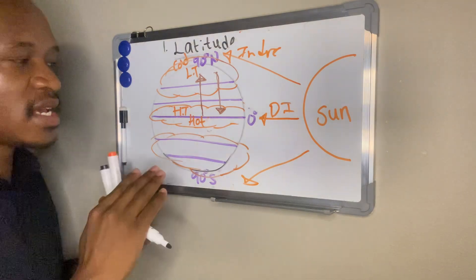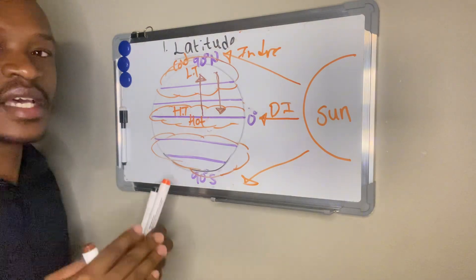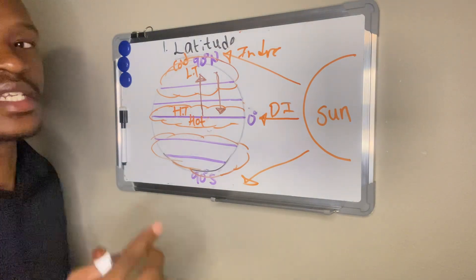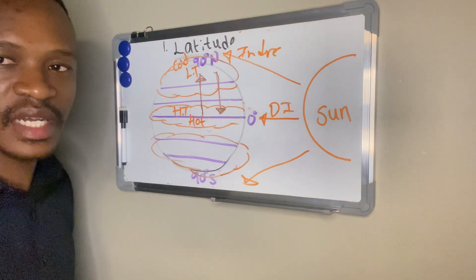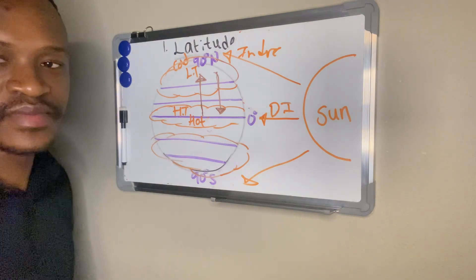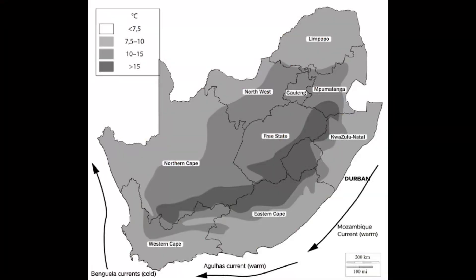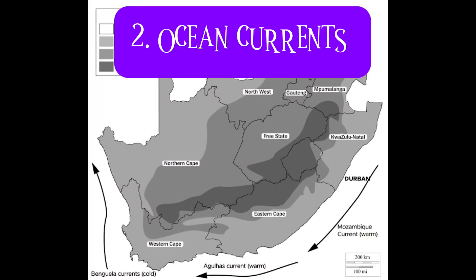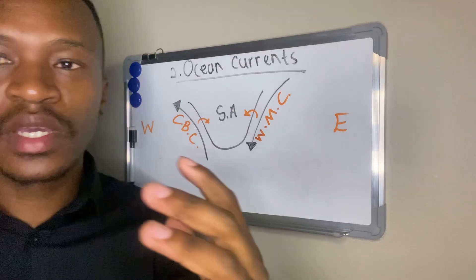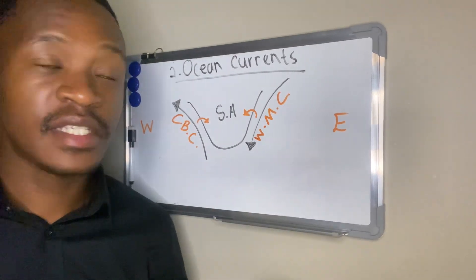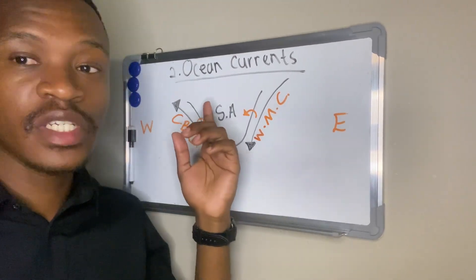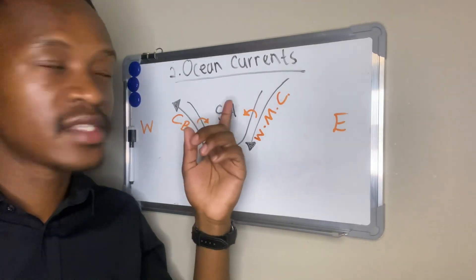At the equator there is high temperatures; at the poles there is low temperatures. The second factor which affects temperature is ocean currents.